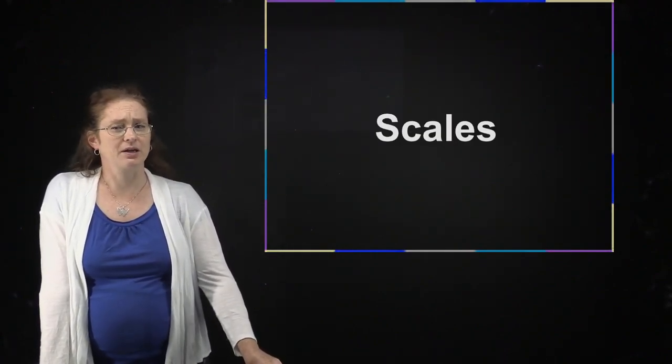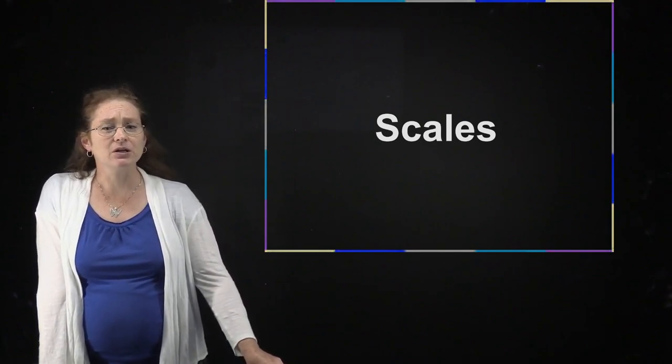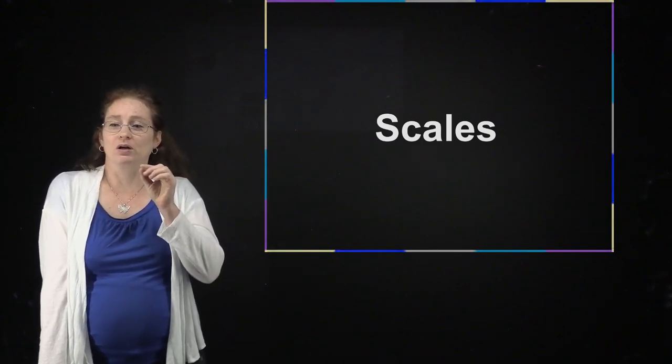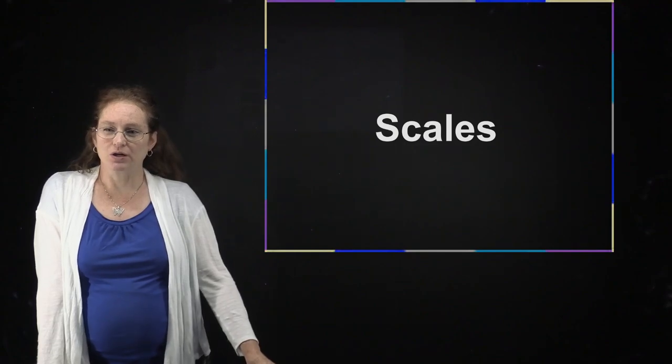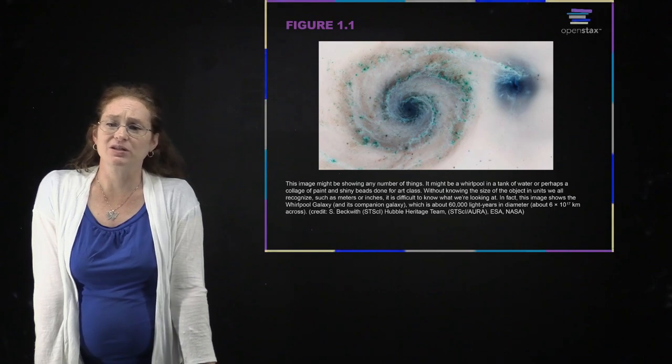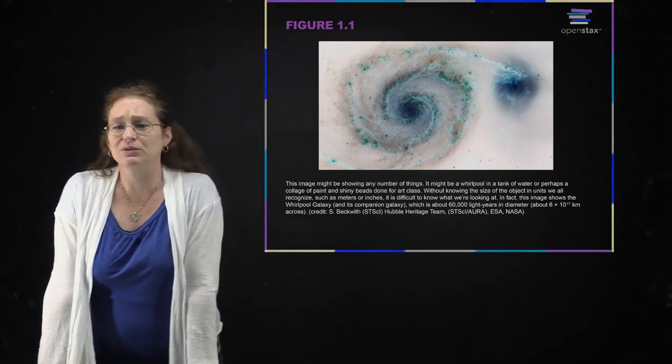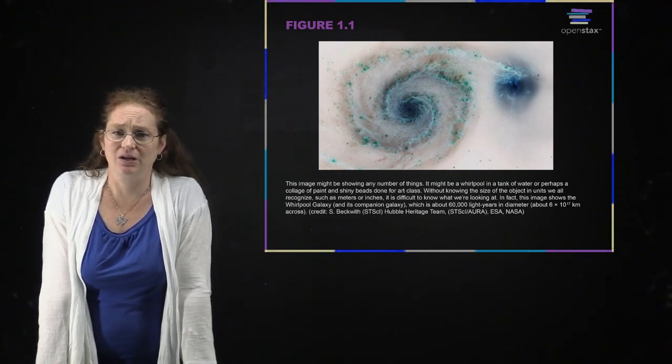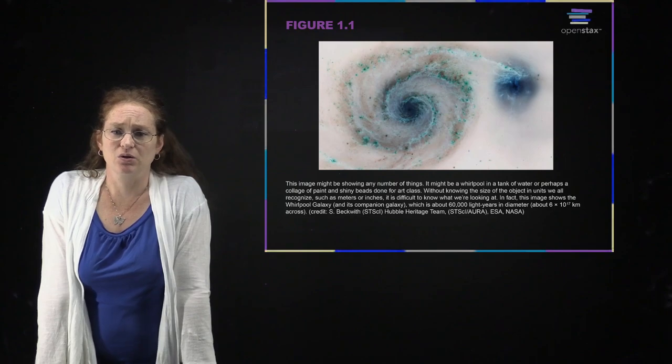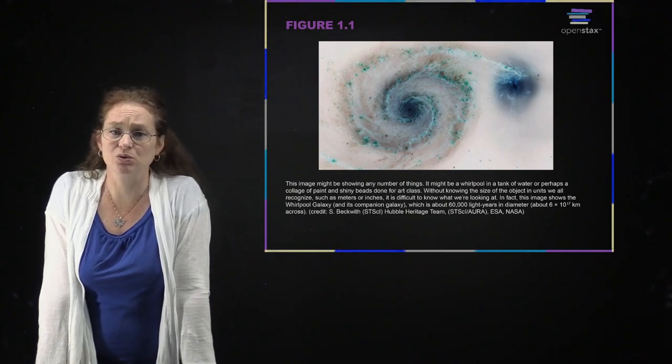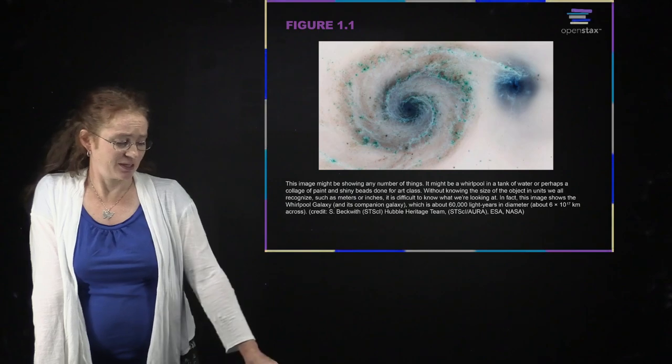We're going to start with talking about scales because scales matter. It matters whether you're talking about things that are micrometers or kilometers. How large things are matters a lot. For instance, this picture here could be showing just about anything if I don't tell you what the scale is. This is actually a galaxy about 60,000 light years in diameter, so it's huge. But without me telling you that, you don't know what you're really looking at.